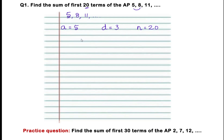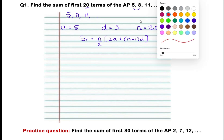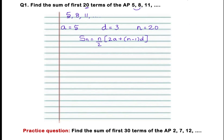The sum of N terms of an AP is given by the formula SN equals N by 2 into 2A plus N minus 1 into D. Do repeat with me and write down the formula at least 10 times to remember it. The next step is to substitute the values of A, D, and N.